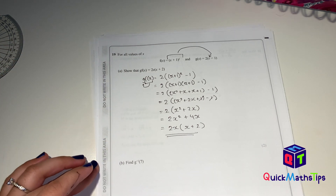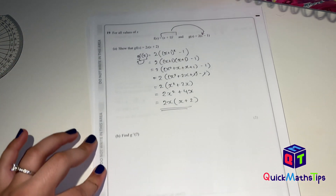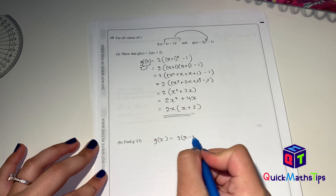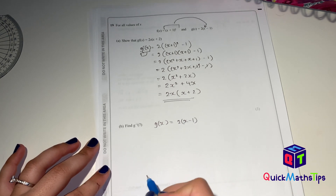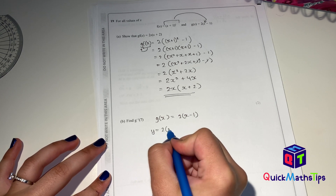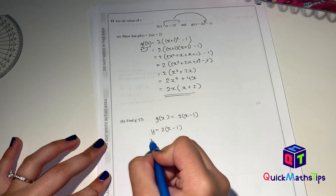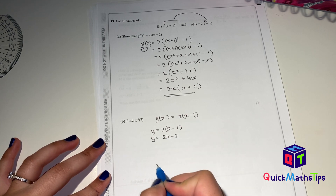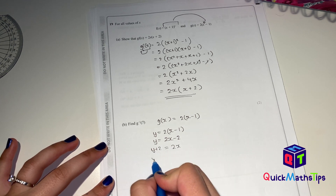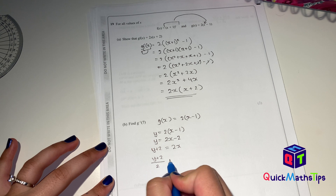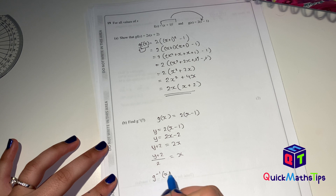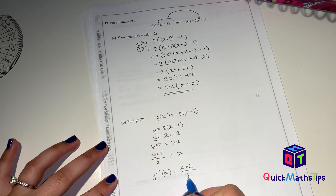Next: find g⁻¹(7). To find the inverse function, there are three steps. Step one: make it equal to y, so y = 2(x − 1). Step two: make x the subject — expand to y = 2x − 2, then y + 2 = 2x, so x = (y + 2)/2. Step three: replace y with x, giving g⁻¹(x) = (x + 2)/2.